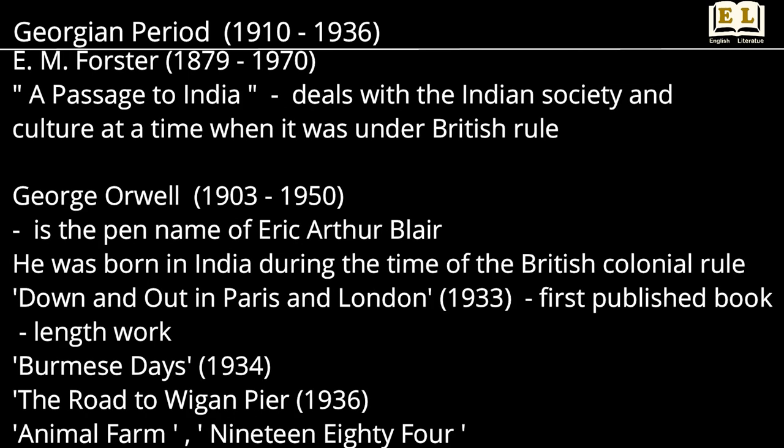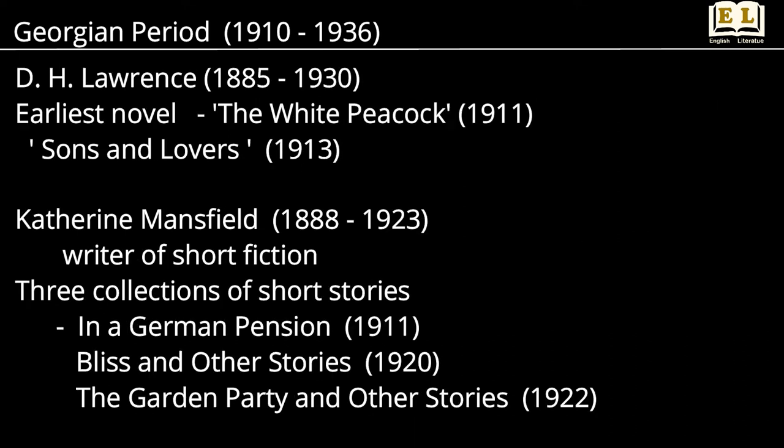E.M. Forster's A Passage to India deals with Indian society and culture at a time when it was under British rule. George Orwell is the pen name of Eric Arthur Blair. He was born in India during the time of British colonial rule. Down and Out in Paris and London is Orwell's first published book-length work. Burmese Days, The Road to Wigan Pier, Animal Farm, 1984, etc. are his other works. D.H. Lawrence's earliest novel is The White Peacock. His largely autobiographical and extremely powerful novel was Sons and Lovers.